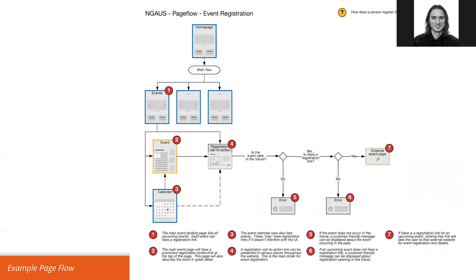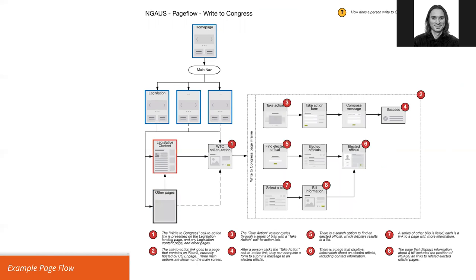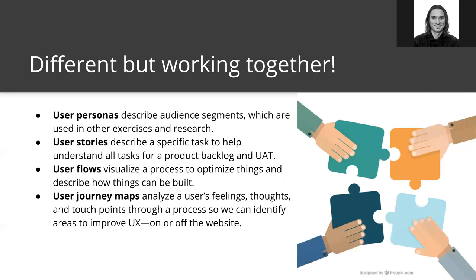We have a flow for event registration on NAGUS because they're an association that has conferences, so we want to understand how people register. Writing to Congress is something very specific to NAGUS — they write about legislation and want people to get in touch with their congressman or woman. So coming back to the terminology: user personas, user stories, user flows, and user journeys are different but very related, they influence each other, and you need to make decisions about whether you need to do one or the other. With user journey mapping, we typically do personas first to help develop into that.